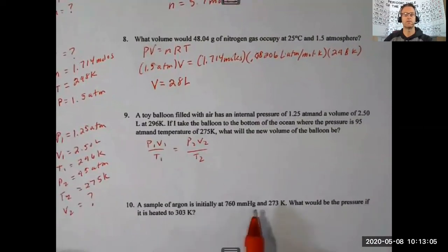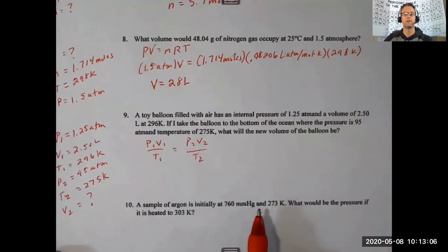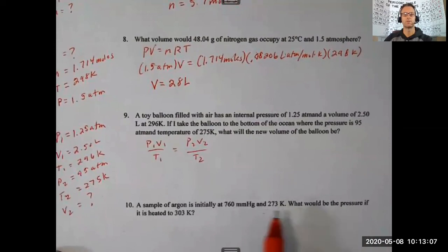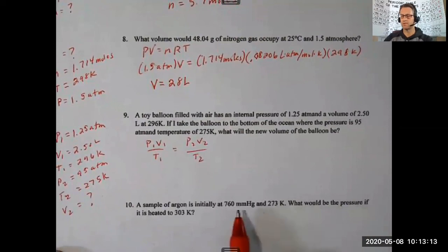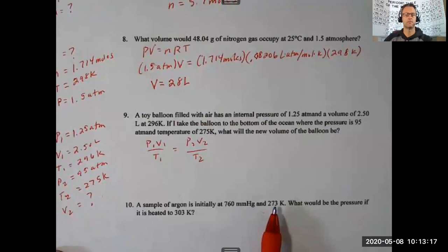Finally, number ten: a sample of argon at 760 millimeters of mercury and 273 kelvin — what would the pressure be if heated to 303 kelvin? Here we have pressure and temperature only, so that's Gay-Lussac's law: P1 over T1 equals P2 over T2. Hope this helps — enjoy and have a great day!